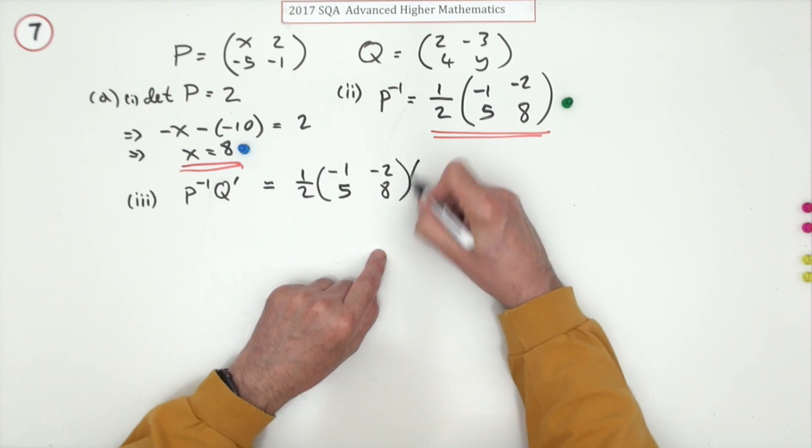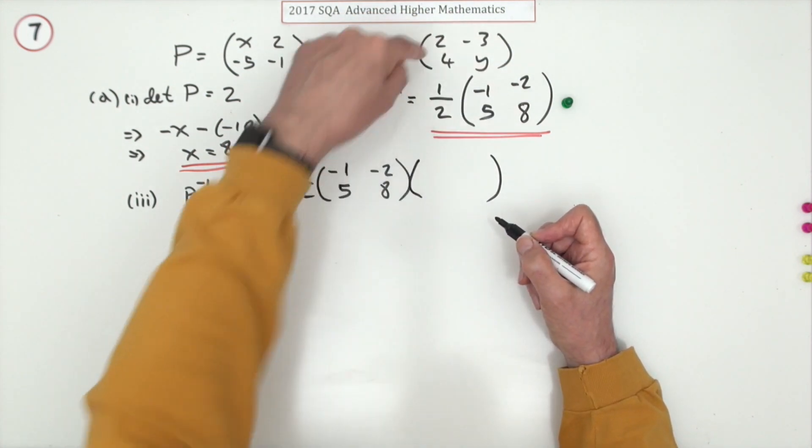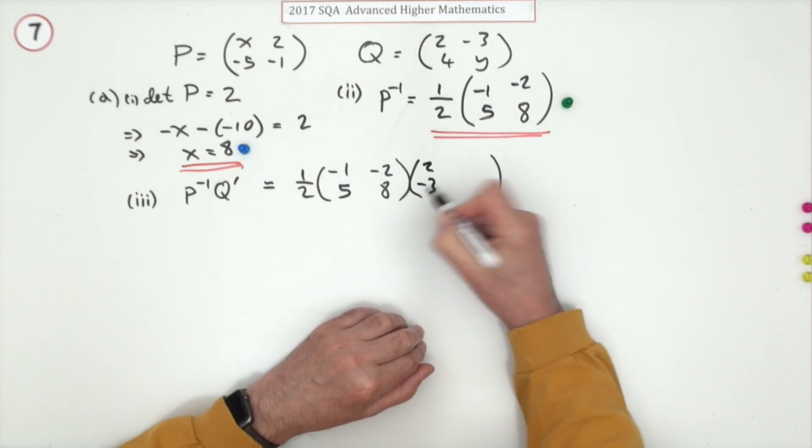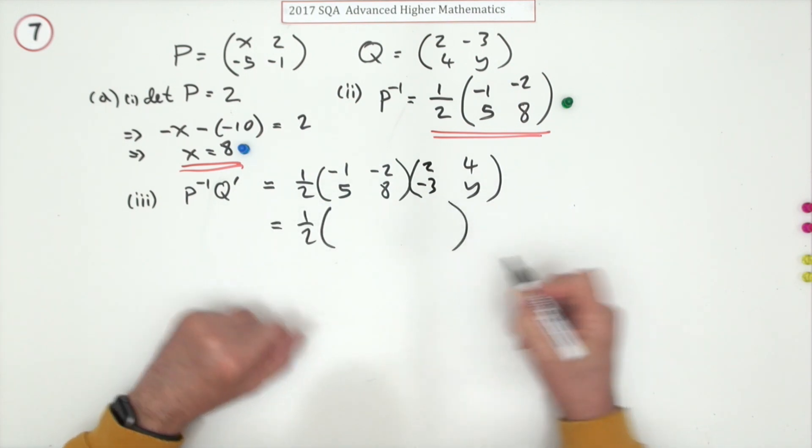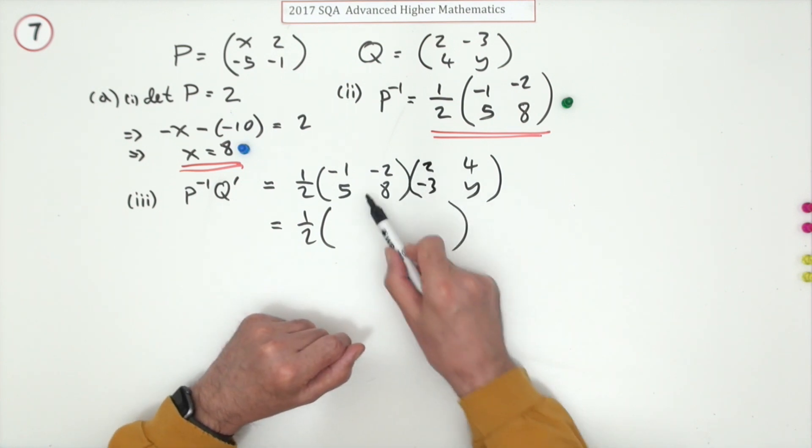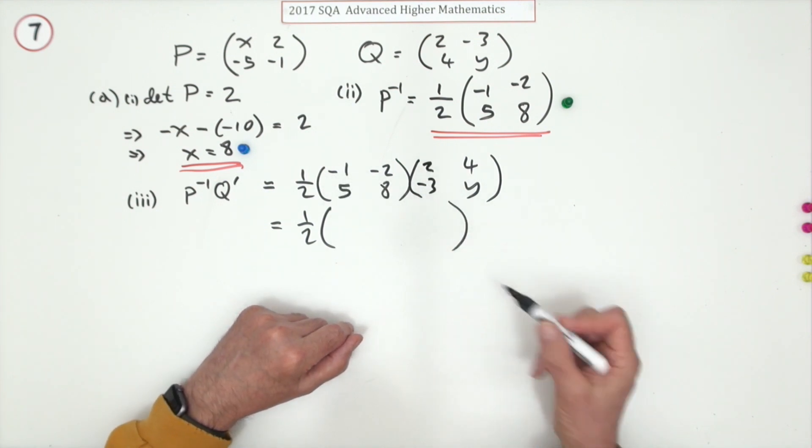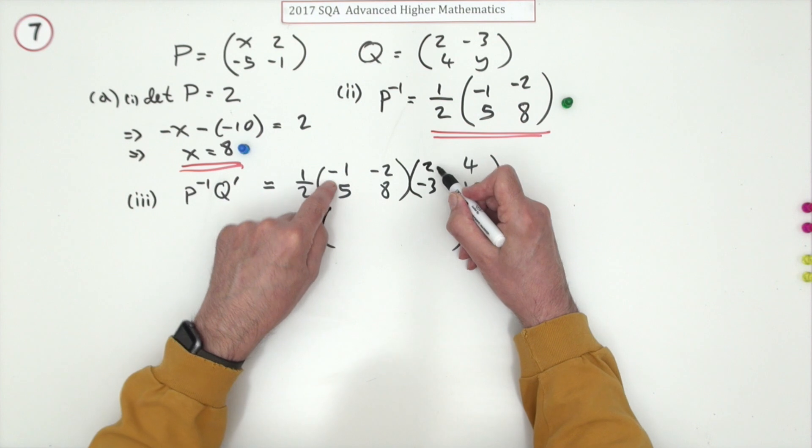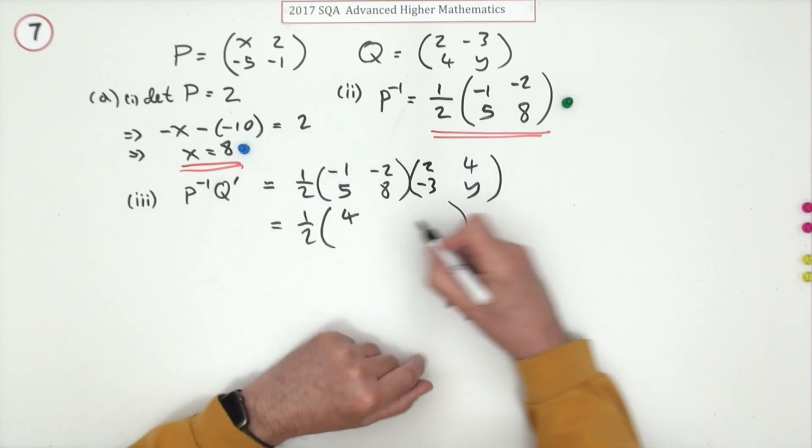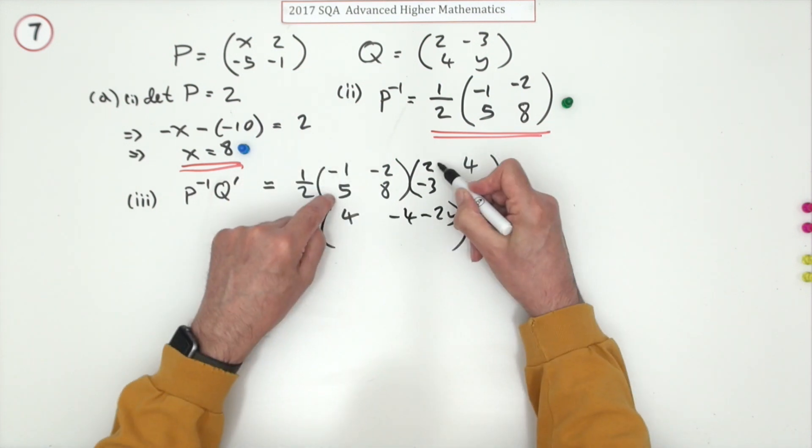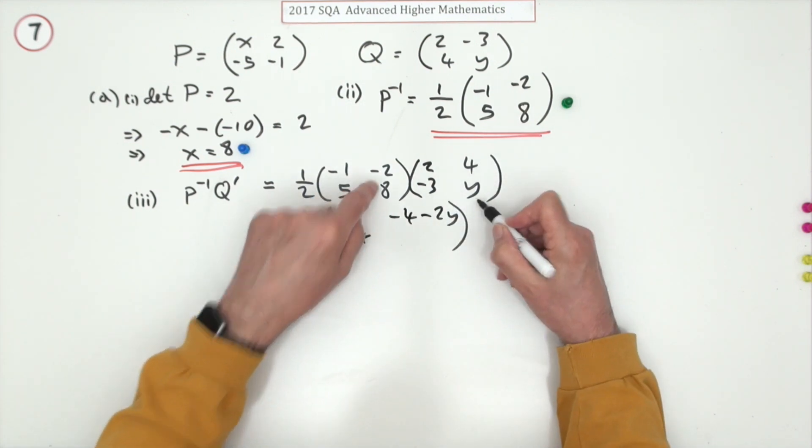Now the transpose of Q, well that just means you turn the rows into columns. The first row becomes the first column, the second row becomes the second column. Leave that half out just now and multiply those using that pattern for matrix multiplication. That pattern being the scalar product of the row times the column. So you've got negative two plus six, that's four. Negative four take away 2y, nothing I can do with that. Ten take away 24 is minus 14. Twenty plus 8y.